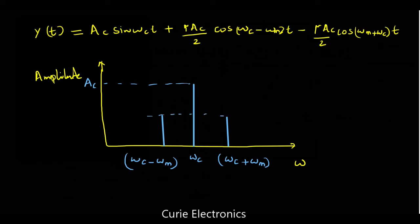Amplitude of both sidebands equal to μAC by 2. This is what we get from double sideband with full carrier. That is what we get from this class C amplifier AM generated wave. And this bandwidth is equal to 2 times ωm.